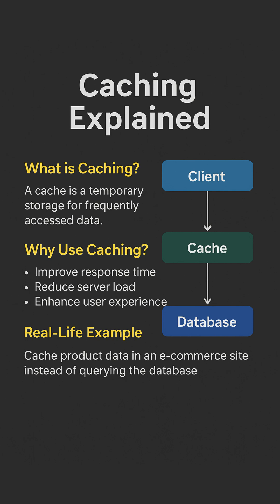Think of caching like a fast access shortcut. Instead of always going to the main source like a database or external API, we temporarily store data closer to the user. That closer storage is called a cache, which could be in memory, on disk, or even on the client side like in the browser.